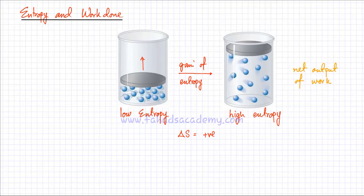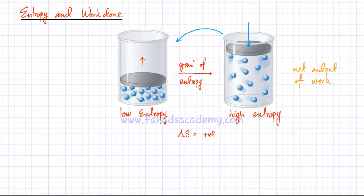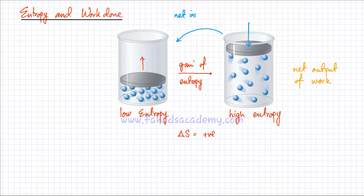We can also discuss the opposite process. If we go from a low pressure system and convert it into a high pressure system, external work would be done to push this plate downwards and there would be a net input of work. So if you move from a high entropy state to a low entropy state, that means there's a net input of work.